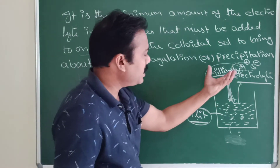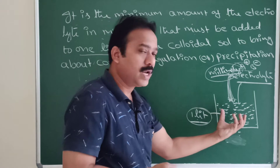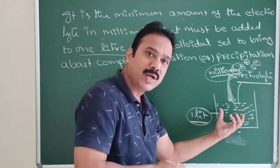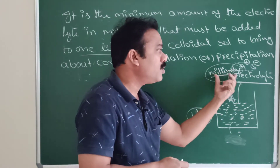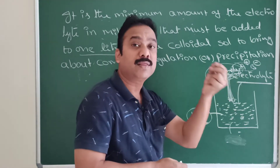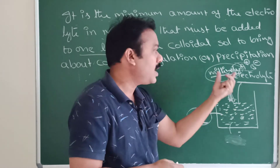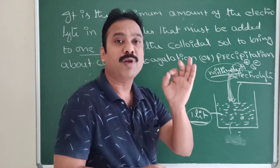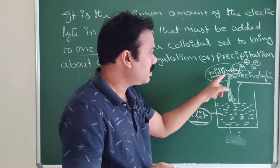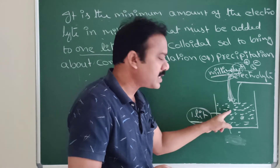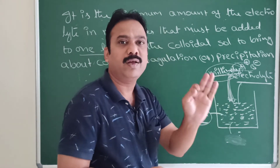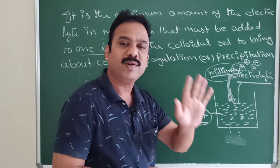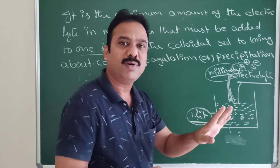So, to completely coagulate 1 liter of a colloidal solution, the number of millimoles of electrolyte required is the flocculation value. For example, if 3 millimoles are required, the flocculation value is 3. If 5 millimoles are required, the flocculation value is 5. That is the minimum amount.